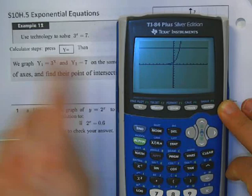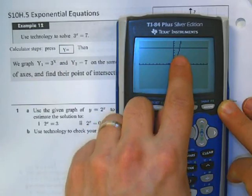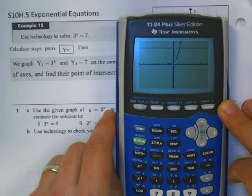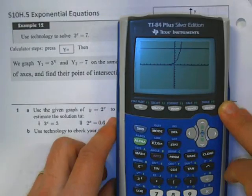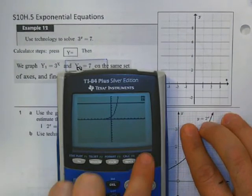And we want to find out, if we're using technology to solve, we want to find out where they intersect. So the first thing, let's try to graph this. If I do second graph, I'm going to get a table.